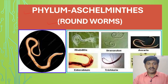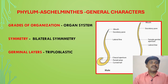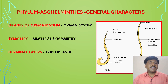Why are these animals called roundworms? Because their body is round, with a cylindrical shape — that is why they are called roundworms. First of all, let us try to understand the general characteristics of the phylum Aschelminthes.